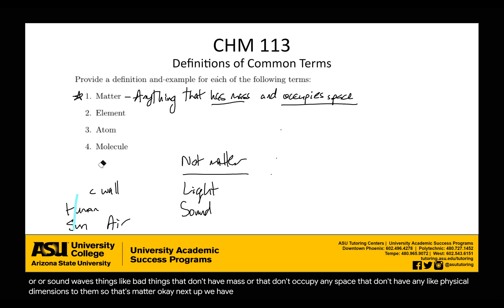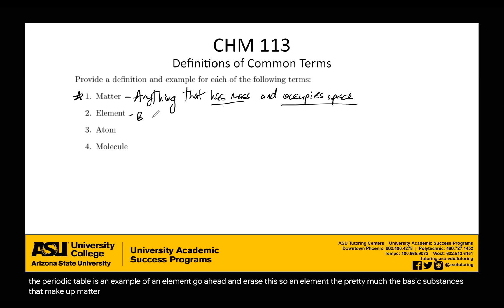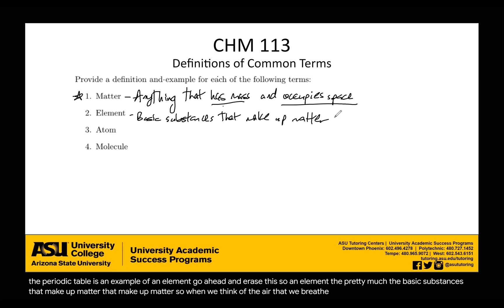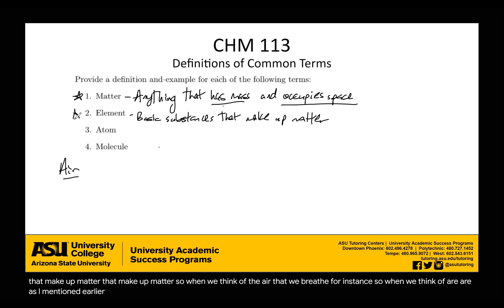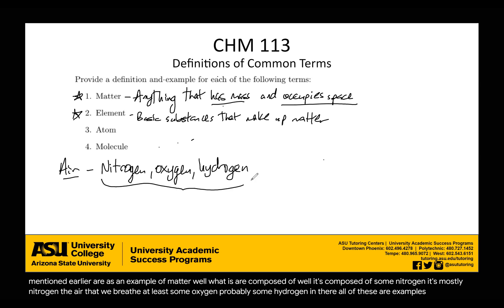Next up we have elements. If you're familiar with the periodic table, everything on the periodic table is an example of an element. Elements are pretty much the basic substances that make up matter. When we think of the air that we breathe, for instance — air is an example of matter — what is air composed of? It's composed of nitrogen, mostly, some oxygen, probably some hydrogen. All of these are examples of elements.